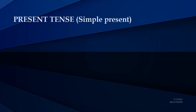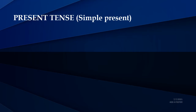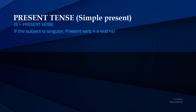The first tense is simple present. In simple present, the sentence form is subject plus verb. The subject may be I, we, you, they, or he, she, it. The subject comes before the verb. If the subject is singular, we add 's' to the verb. If the subject is plural, we don't add 's'. For example, 'eat' is a verb — 's' is added if the subject is singular, and we don't add 's' if the subject is plural.